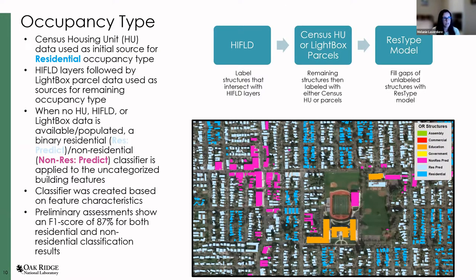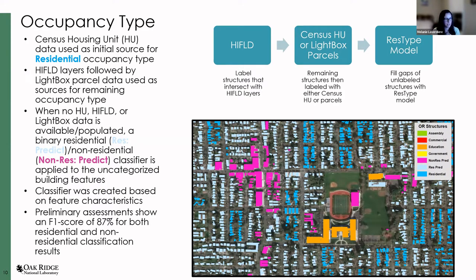We've got HighField, some census housing unit data, and LightBox data, but there isn't complete coverage for any of these. So next we developed another machine learning model we call ResType — just filling in the gaps. Anywhere we don't have ancillary data to inform us of land use, we have another machine learning model that assigns a residential or non-residential category to a structure. We're hoping to get more refined with that — instead of just non-residential, say it's commercial or industrial — but that gets a little tricky based on the feature shape. For now it's just residential versus non-residential, and we've currently achieved about an F1 score of 87% for both residential and non-residential classification results.